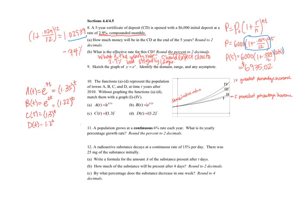And so if I want to put these in order, the smallest one would be the 1.2, so D is graph 1. The next one is the 1.22 to the t, that's B. The next one is the 1.3 to the t, that's graph 3. And the next biggest is the 1.35 to the t, and that is graph 4.